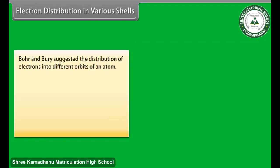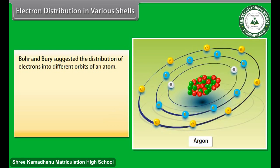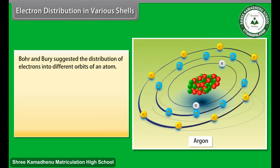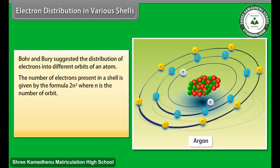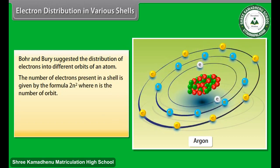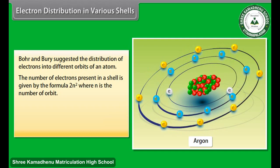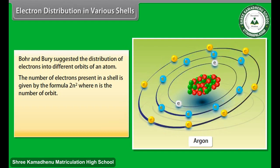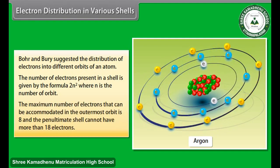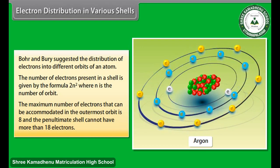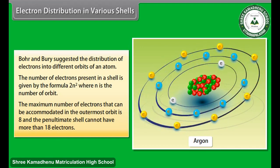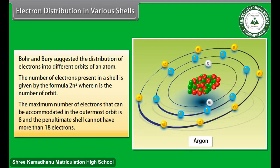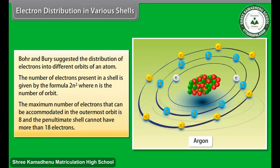Electron distribution in various shells. Bohr and Burry suggested the distribution of electrons into different orbits of an atom. The number of electrons present in a shell is given by the formula 2N squared, where N is the number of orbit. The maximum number of electrons that can be accommodated in the outermost orbit is 8, and the penultimate shell cannot have more than 18 electrons.